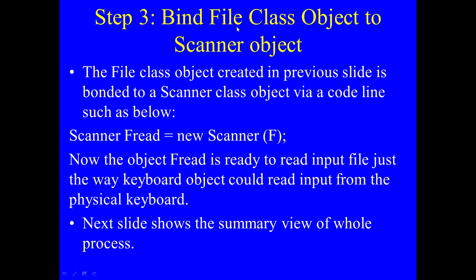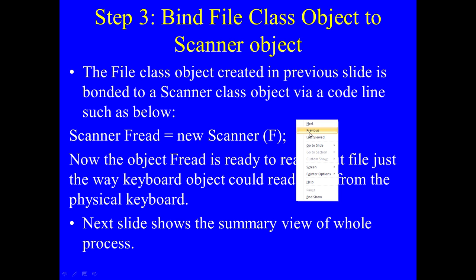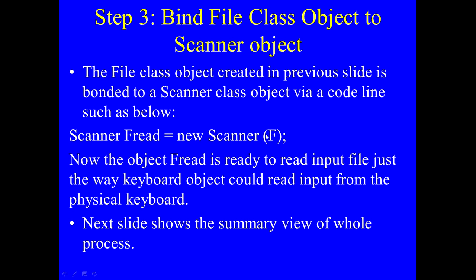Step three is we bind the file class object to a scanner object. The file class object we created previously is bonded to a scanner class object with: Scanner fRead = new Scanner(f); Earlier the scanner constructor took System.in when reading from the keyboard, but now we pass the file object F. Once this line is done, the object fRead is ready to read the input file, just the way the keyboard object could read from the physical keyboard.